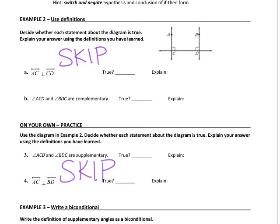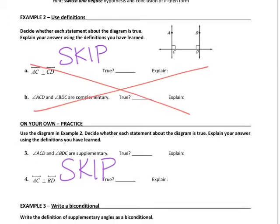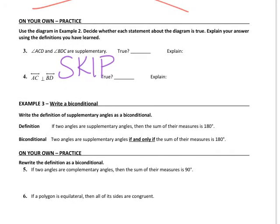On the back, skip example two and the on-your-own practice for example two as well — you don't have to do any of that, so just write the word skip there. We're not going to be doing any of that section.